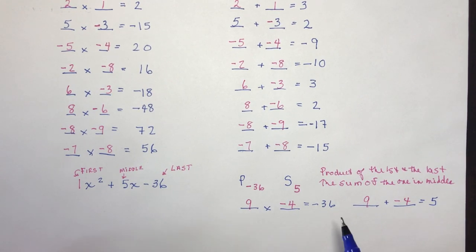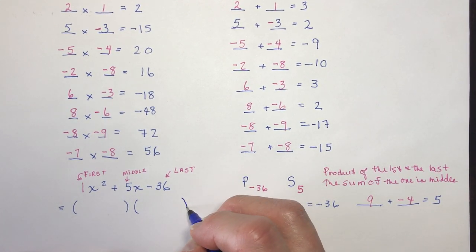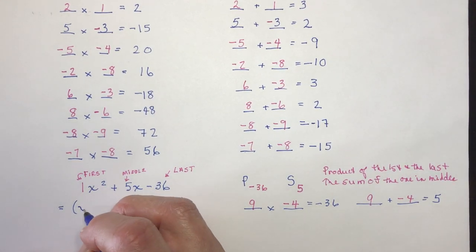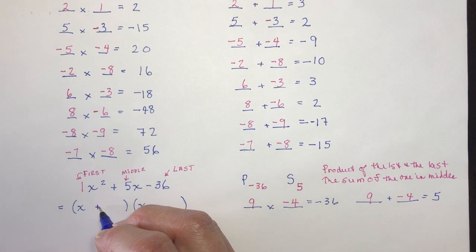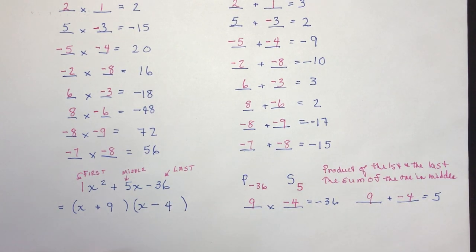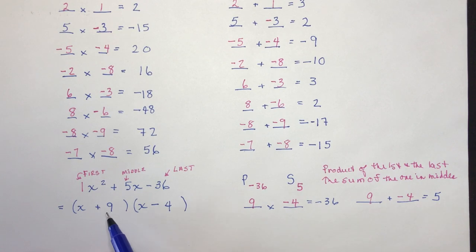For these special trinomials where the coefficient is only 1, all you have to do is make two brackets, put an x in the first position of each, and plug in the special numbers. So x plus 9 and x minus 4. When you expand: x times x is x squared, then minus 4x plus 9x gives 5x, and 9 times negative 4 is negative 36. That was pretty easy.